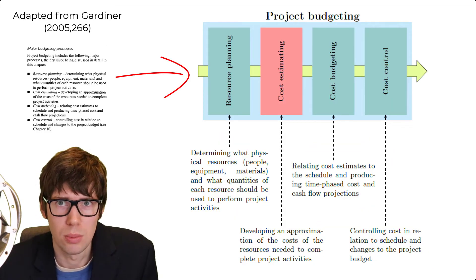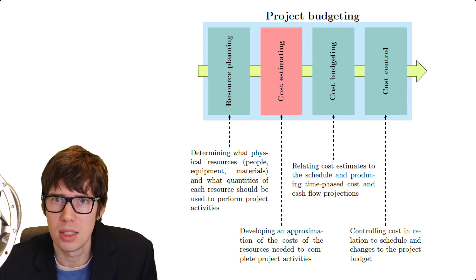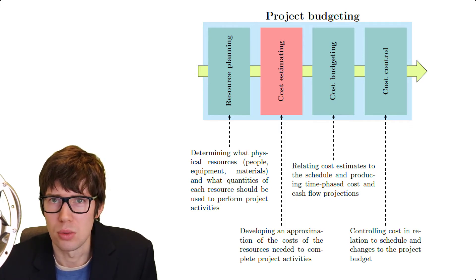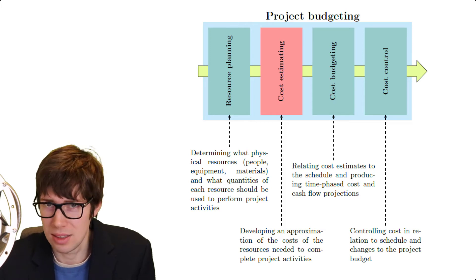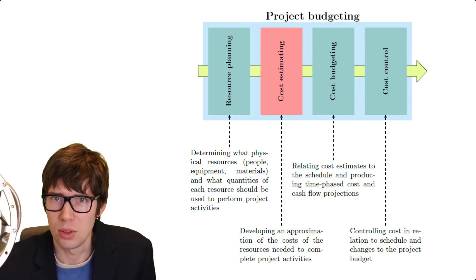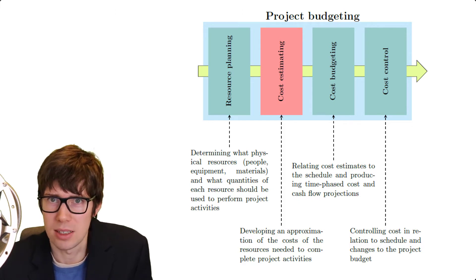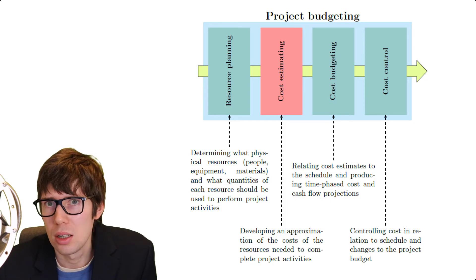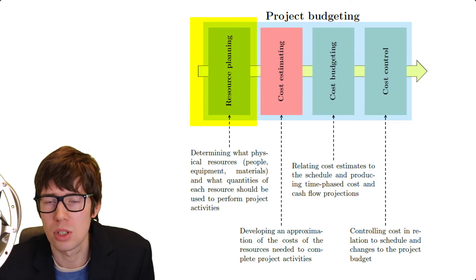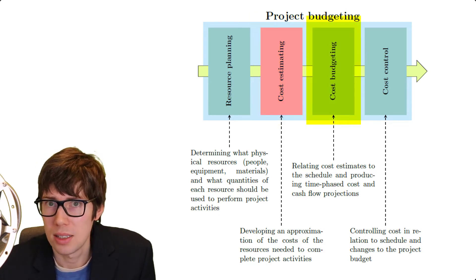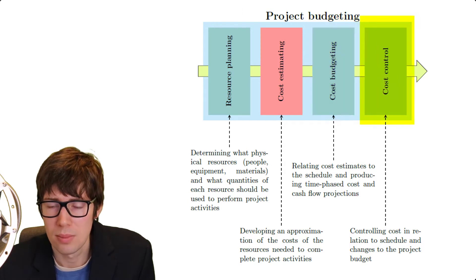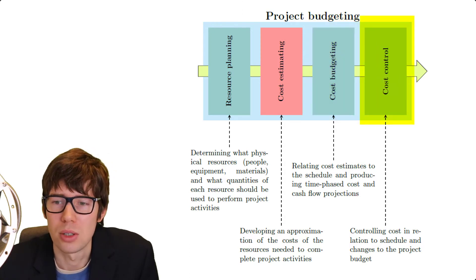Let's get straight to the point. Project budgeting consists of four distinct phases. The names of these phases vary a bit from source to source, but there is pretty much agreement that there are four phases in a particular sequence. According to Gardner 2005, these four stages are: first, resource planning; second, cost estimation; third, cost budgeting; and fourth, cost control.